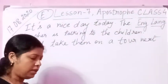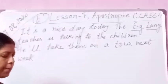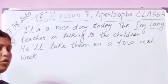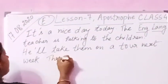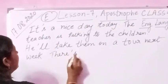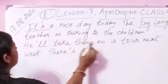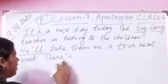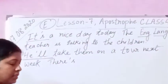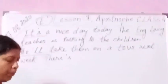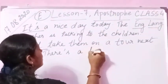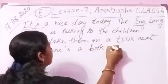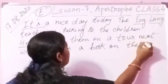Next one: there is a big window in the class. The contracted form will be there's — T-H-E-R-E apostrophe S. Let us underline where we are changing so it will be easy to understand. There's a book on the table.